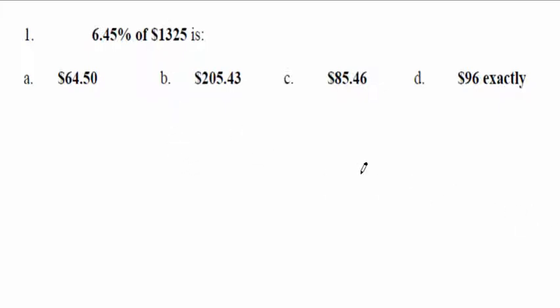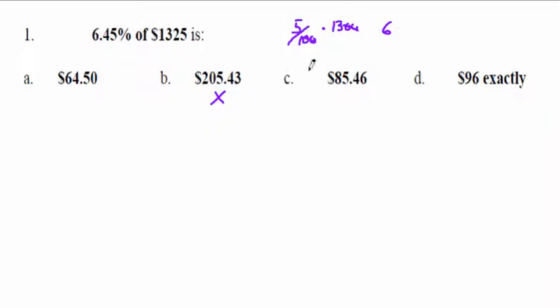Let's start with this: 6.45% of $1,325. The first thing to do is look at dumb answers. I would estimate that 6.45 is kind of like 5%, and 5% of $1,300 is about $65 — so the answer's somewhere around 65. It's definitely not the really small answer, and this one sounds a little too high since I'm expecting something in the 60s.